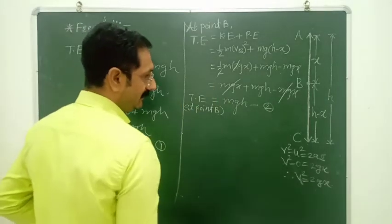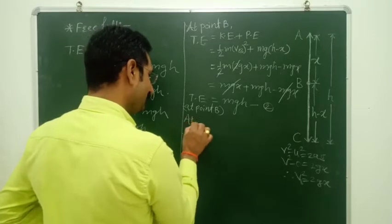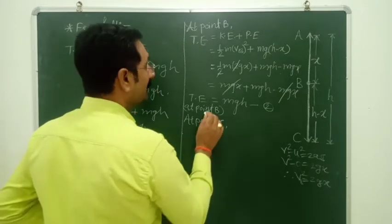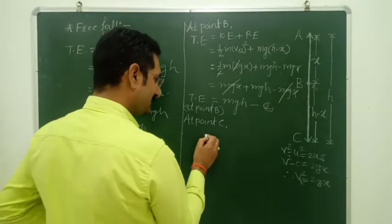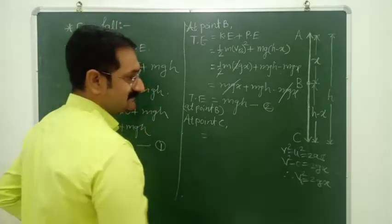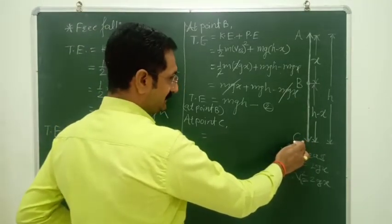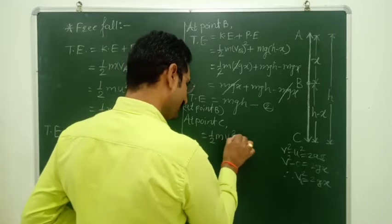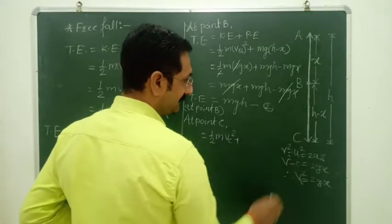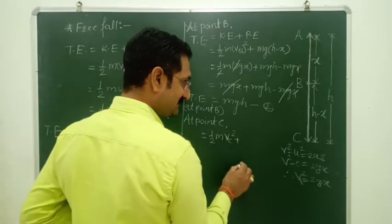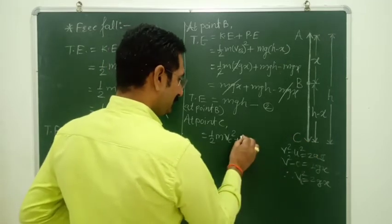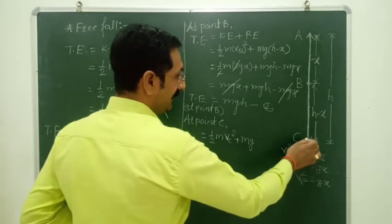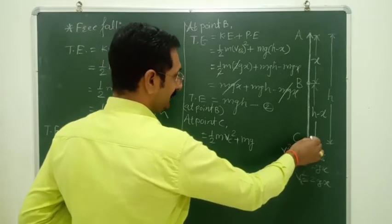Now at point C, let's find the total energy. Total energy = kinetic energy + potential energy. At point C, the kinetic energy is maximum. Formula: one-half m·(V at C)² plus m·g·height at C. Since C is at the ground surface, height = 0, so potential energy = 0.